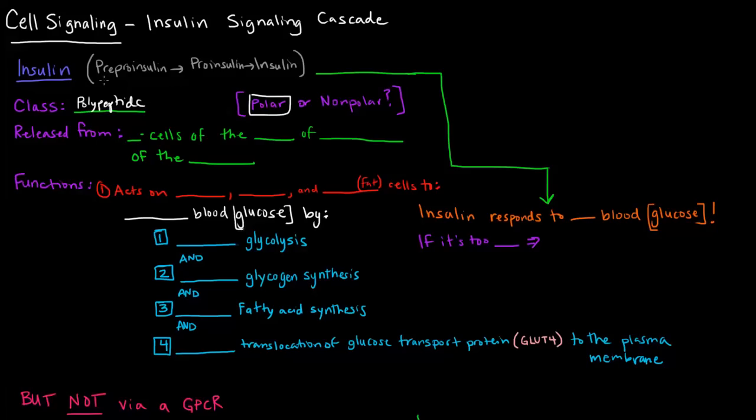Insulin is initially synthesized as an inactive precursor called prepro-insulin, which is cleaved and turned into pro-insulin, and that is later turned into insulin, the active form. Now that insulin is released specifically from the beta cells of the islets of Langerhans in the pancreas.